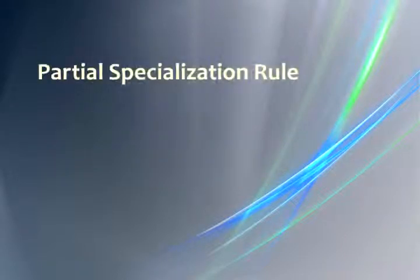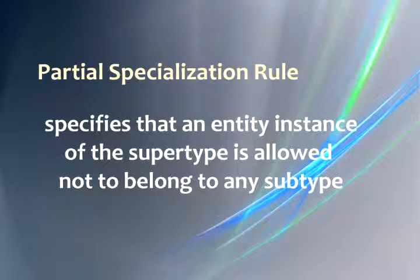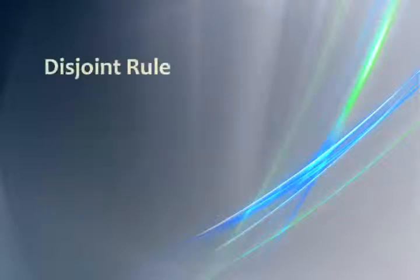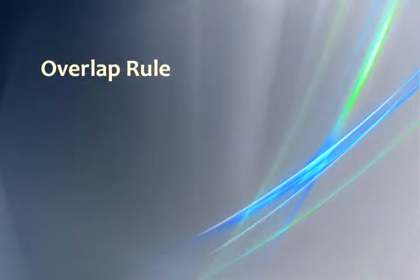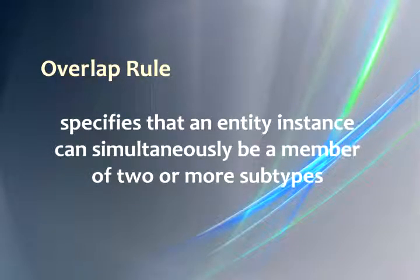The partial specialization rule specifies that an entity instance is allowed not to belong to any subtype. The disjoint rule specifies that if an entity instance of the supertype is a member of one subtype, it cannot simultaneously be a member of any other subtype. And the overlap rule specifies that an entity instance can simultaneously be a member of two or more subtypes.